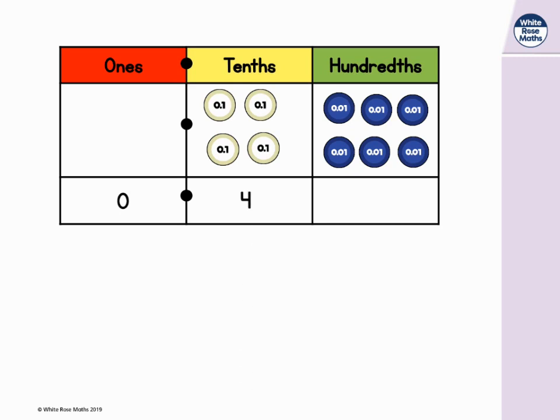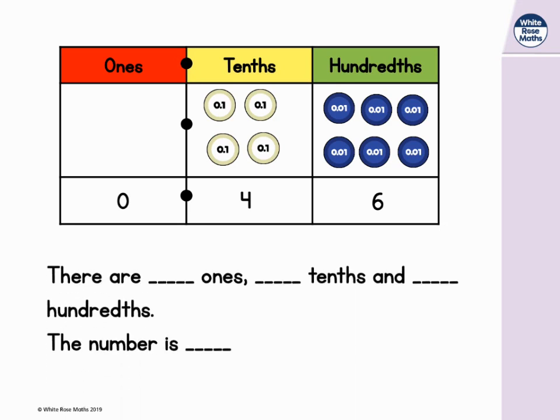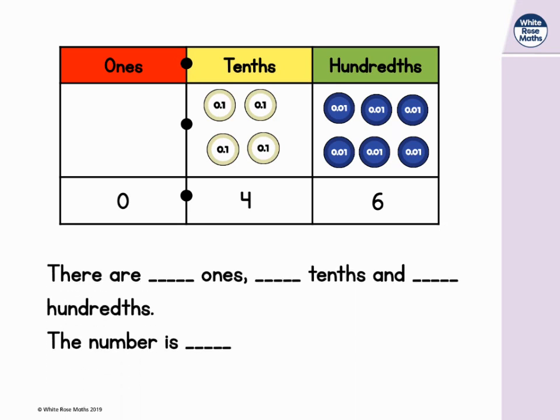There are one, two, three, four, five, six hundredths in our place value grid. Let's use a stem sentence to help us describe this number. There are no ones, four tenths, and six hundredths. The number is zero point four six.